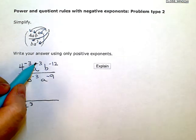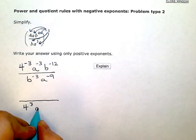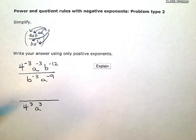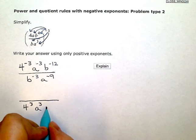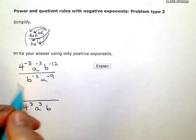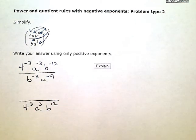This a has a negative exponent, so it's going to go downstairs to the denominator, and I'm going to change the sign. b, again, has a negative exponent, so it's going to go downstairs, and I'm going to change the sign to positive.